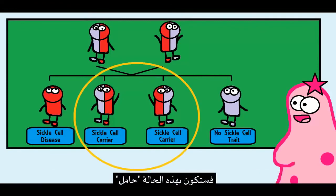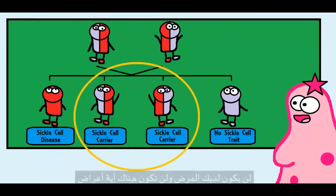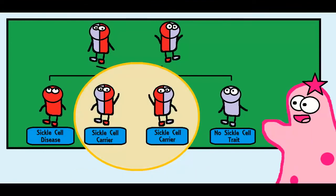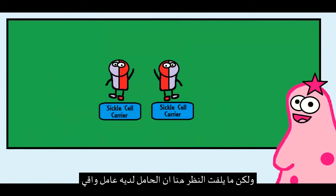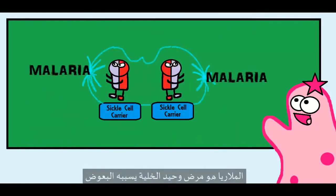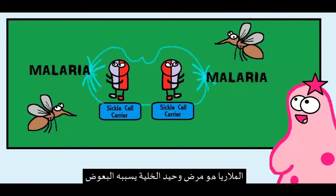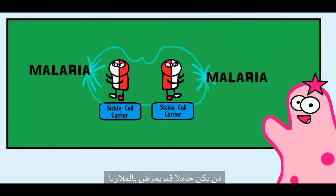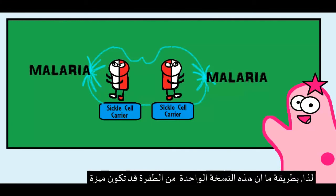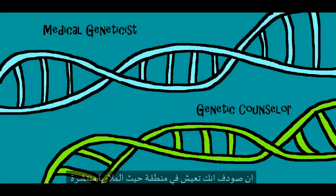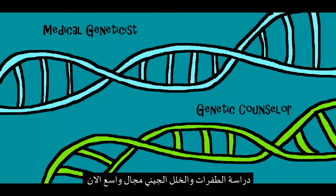But if you inherit just one copy of the mutated gene from one parent, you're considered a carrier — you don't officially have the disease and usually don't have symptoms. Interestingly, carriers appear to have a protective factor against malaria, a disease caused by a protist transmitted by mosquitoes. These individuals can still get malaria, but their symptoms are usually less severe. In a way, this one copy of the mutation can be an advantage if you live in an area where malaria is prevalent.